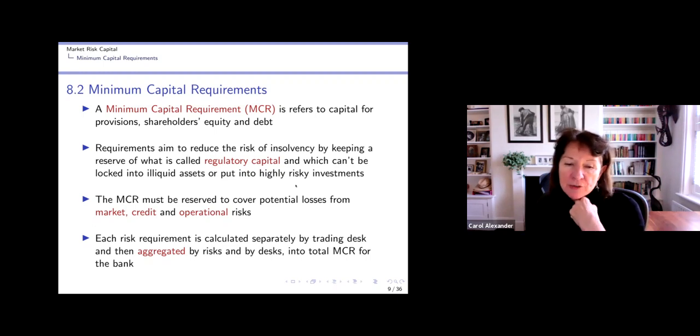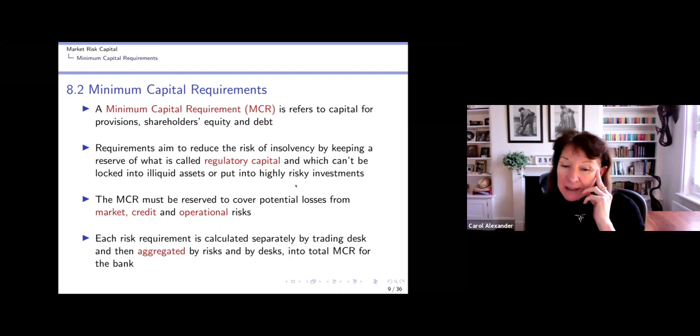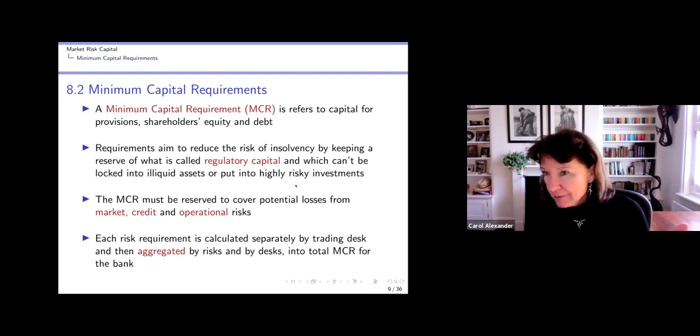So each risk requirement is calculated separately per trading desk. So it could be the loans desk. It could be the equity desk. It could be the credit default swap desk, et cetera, et cetera, et cetera. And then they are aggregated. They're not added up. They're aggregated, taking account of correlations. They're aggregated by risks and by desks. So on the trading desk, you might have separately market credit and on a trading desk, say credit default swap, you would have a credit spread risk, which is like a market risk requirement.